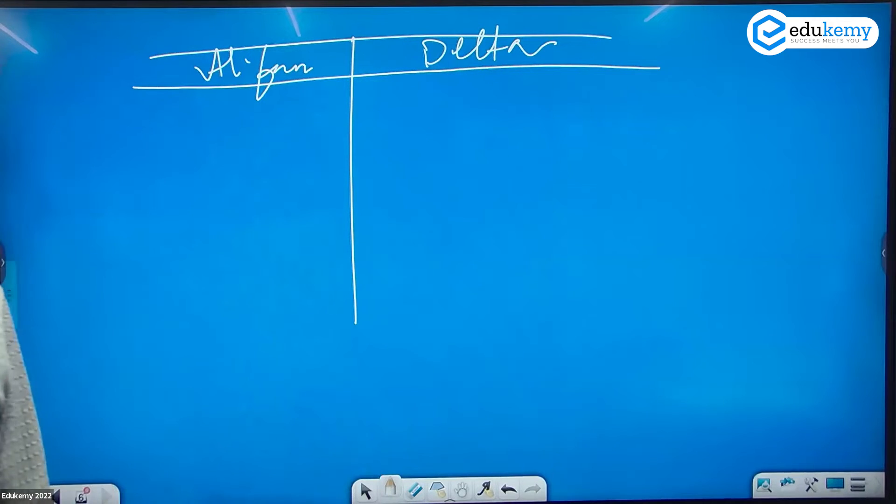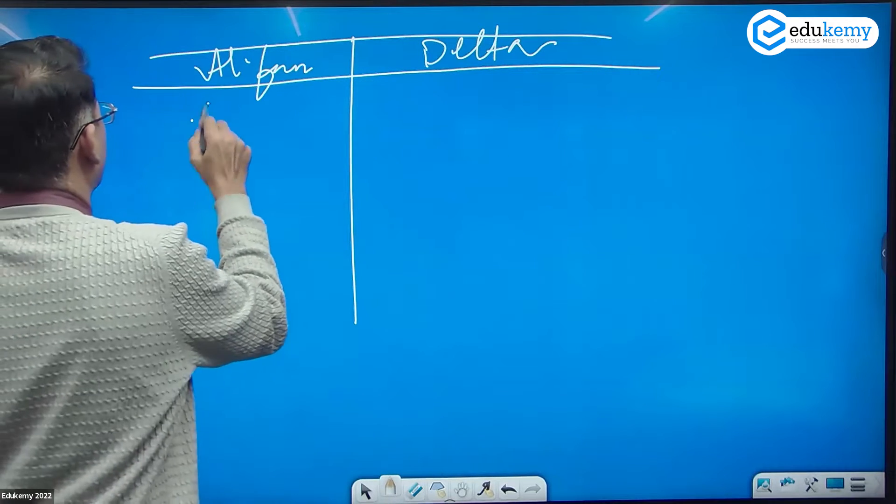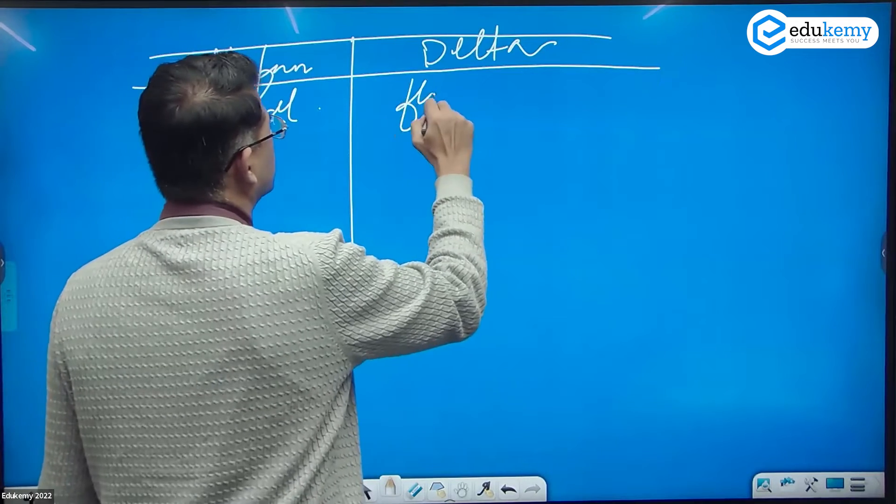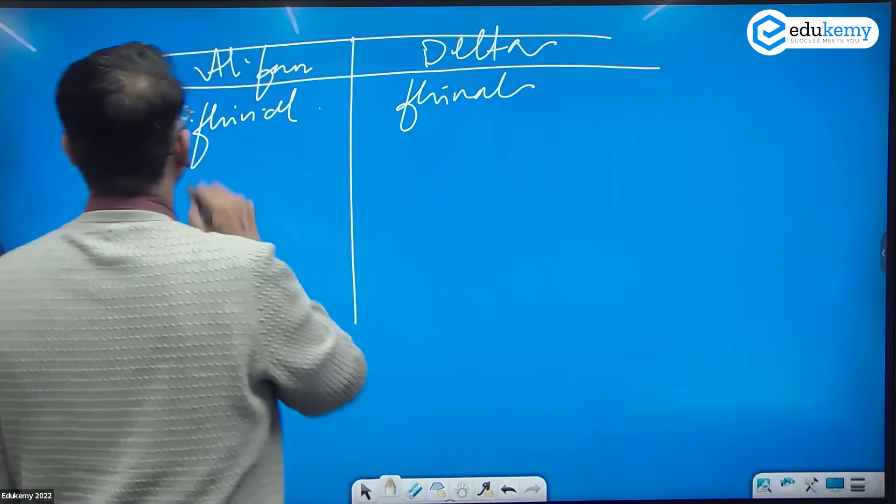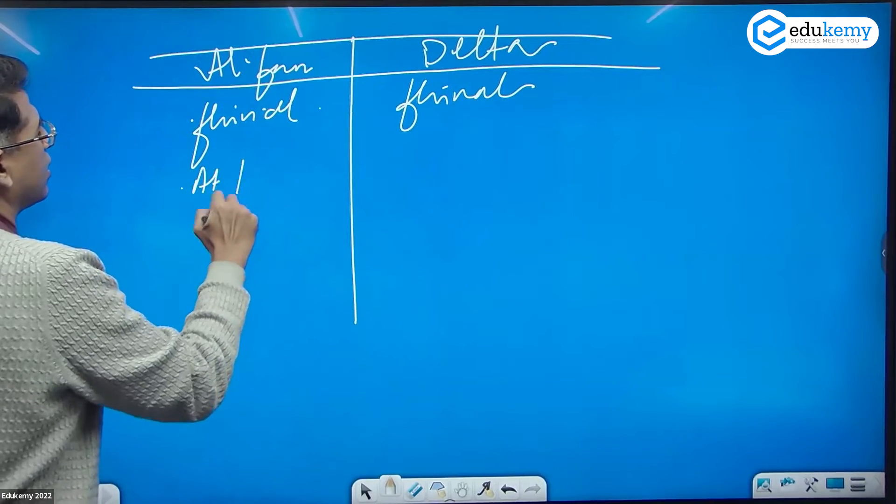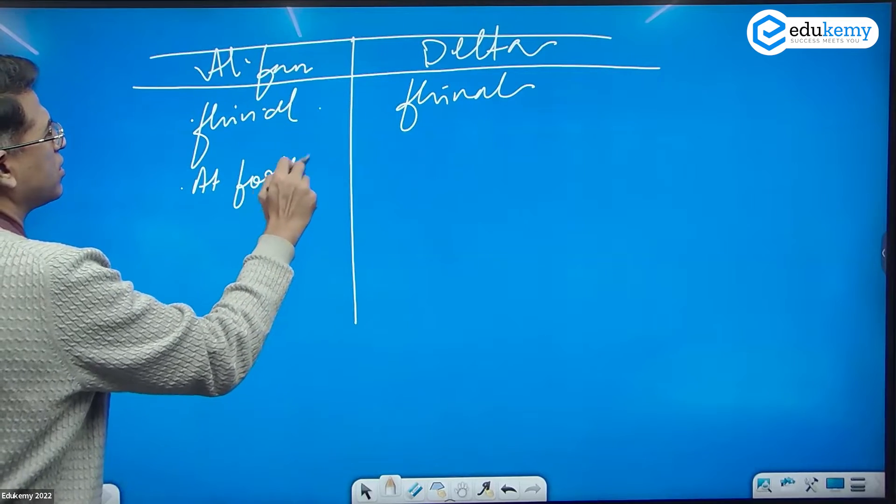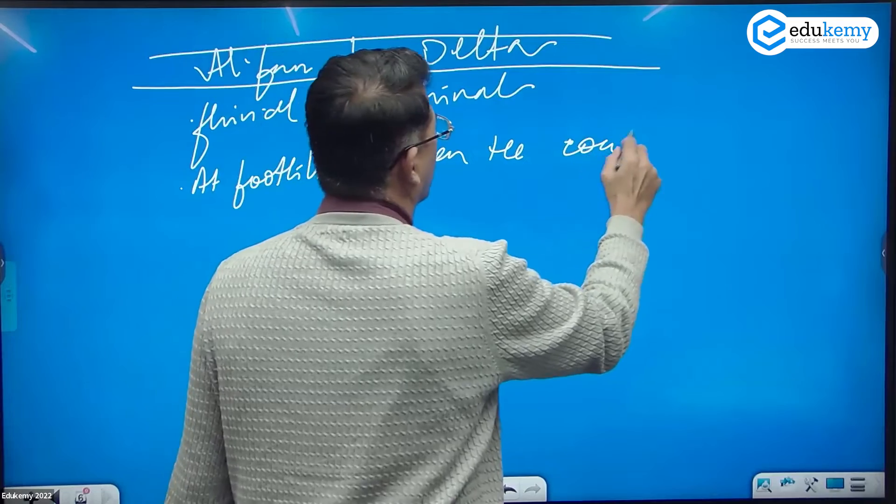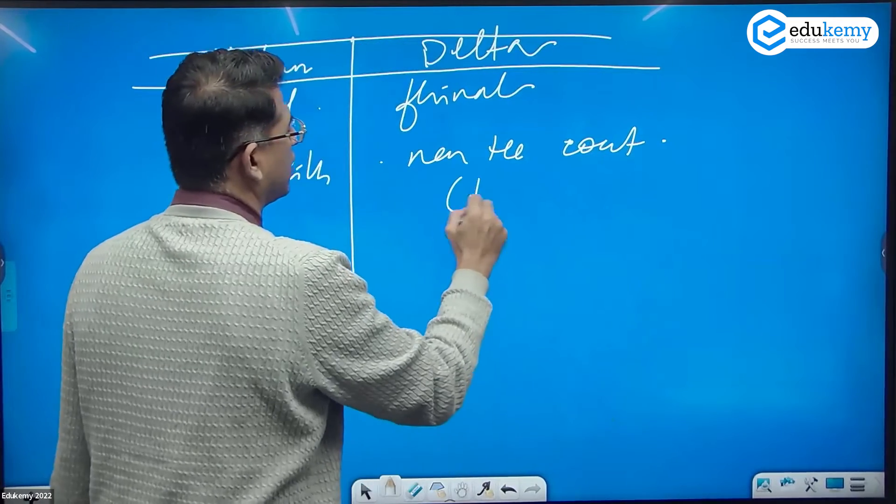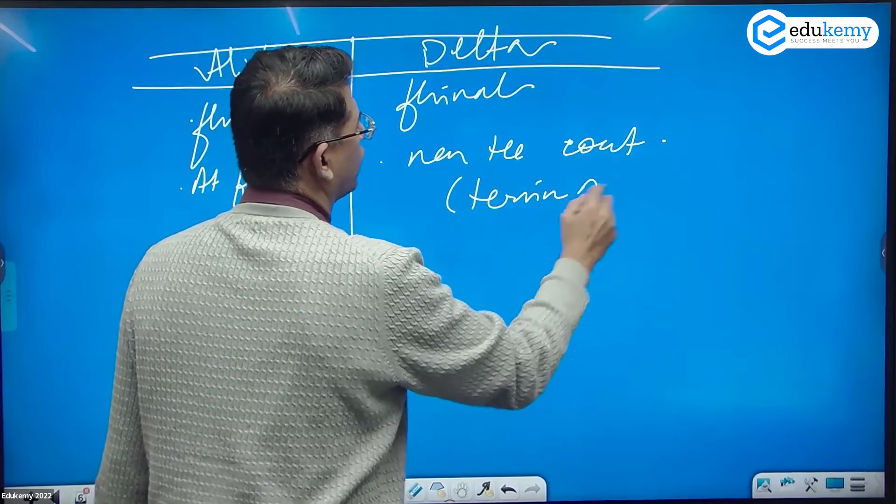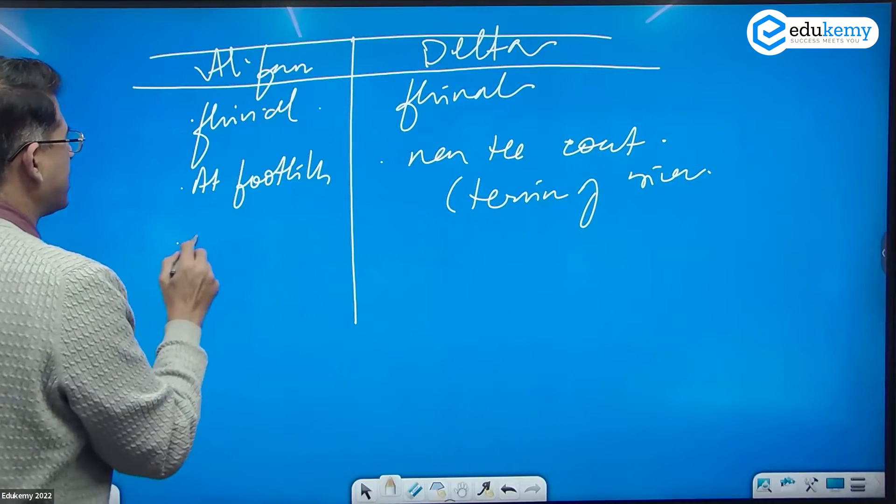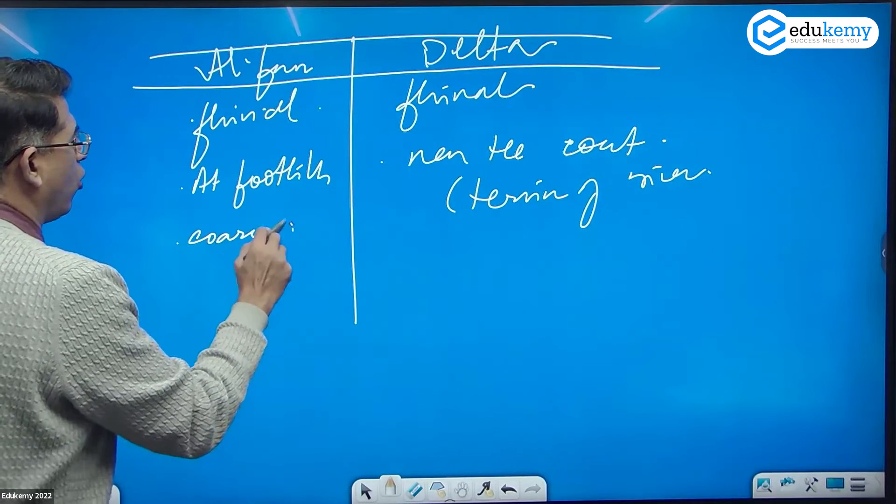Both of them are fluvial. This is at the foothills, this is near the coast at the terminus of the river. Alluvial fans will have coarse and large deposits.